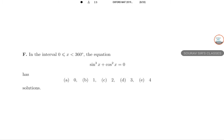In the interval 0 < x < 360°, the equation sin³x + cos²x = 0. How many solutions does this system have? It is given that sin³x + cos²x = 0.